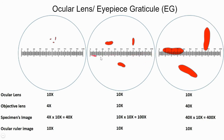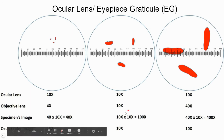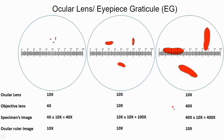This tells us that the eyepiece graticule has no units, and when you keep changing your objective, the scale will give you a different number of divisions for your specimen. That means we need to do some kind of calculation to know what each division means, and this calculation will change every time you change your objective lens.